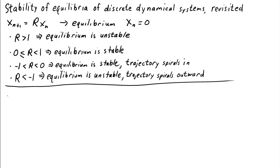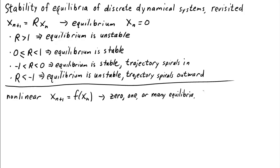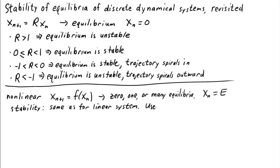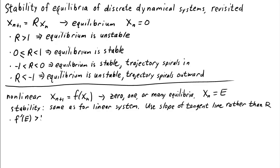What about a nonlinear system? A nonlinear system could have 0, 1, or many equilibria, which we'll call xn equals e. To look at the stability of the equilibria, we use the same results as for the linear system. The only difference is that we use the slope of the tangent line rather than the number r. The slope of the tangent line is the derivative f'(e) evaluated at e.